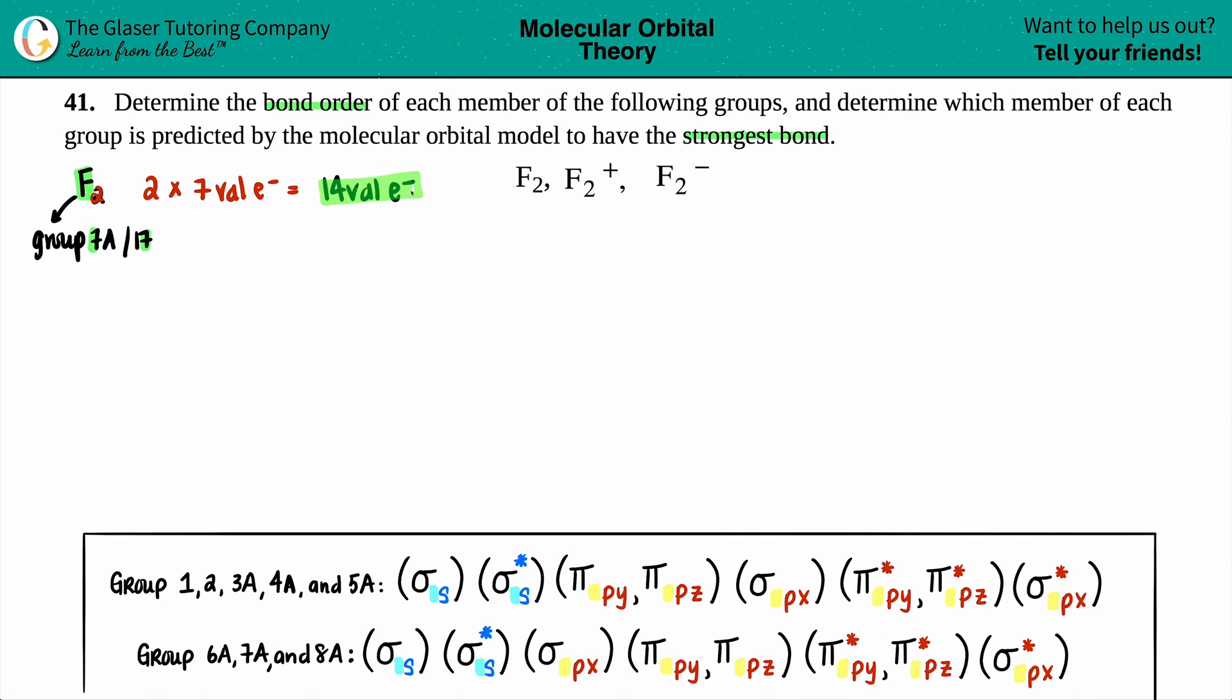All right, so that's going to come super important in a little bit. The next thing is we now have to choose which general molecular orbital configuration are we going to use. And this goes by the group number. There are some groups on the periodic table that have different configurations. So groups 1, 2, 3a, 4a, and 5a, they have this configuration, while the other ones, 6a, 7a, and 8a, they have the other.